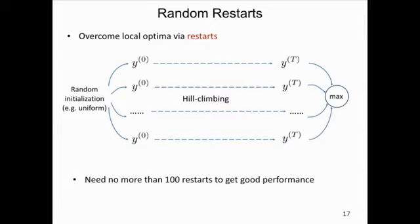Sometimes the greedy method gets stuck in a poor local optimum. Our solution is very simple: we do random restarts. We randomly generate new starting trees from a uniform distribution, run hill climbing, and finally pick the best tree with the highest score. In practice, we need no more than 100 random restarts to get good parsing performance.